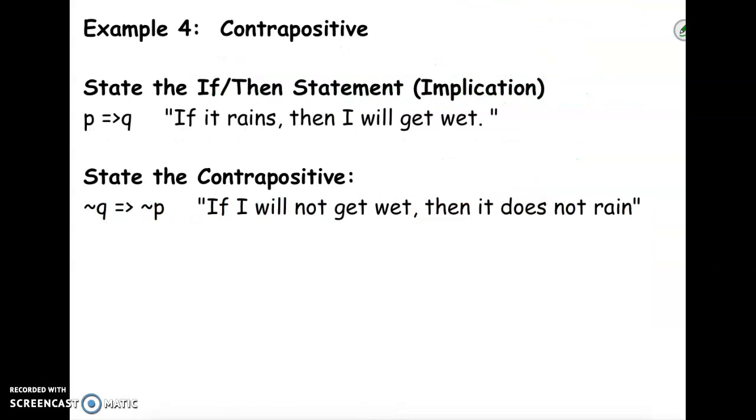So here's an example of a contrapositive. You have your if-then statement. We've seen this example before. It says, if it rains, so that's your proposition P, then I will get wet, proposition Q.